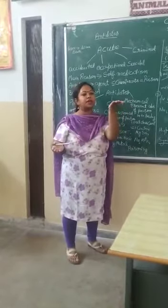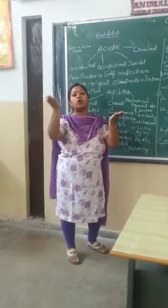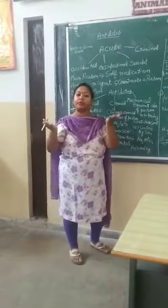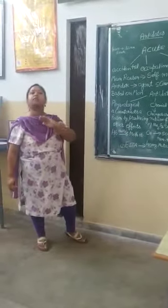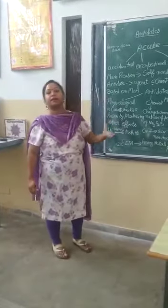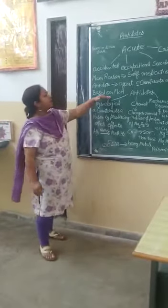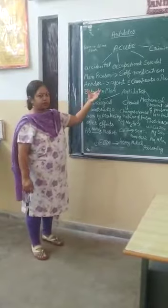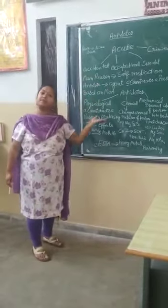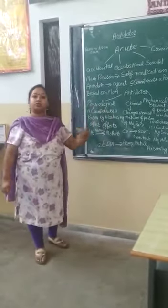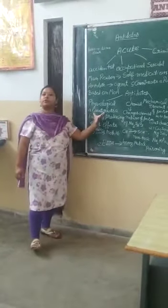Counteract means you have to produce an effect which is opposite to that effect. Suppose substance A is producing some effect — when you want to counteract this effect, substance B will produce the opposite effect of A. That means you have to nullify the poison, counteract it, inactivate it. The main purpose of an antidote is that whatever poison you have inhaled by any of these routes, it has to be eliminated from your body.